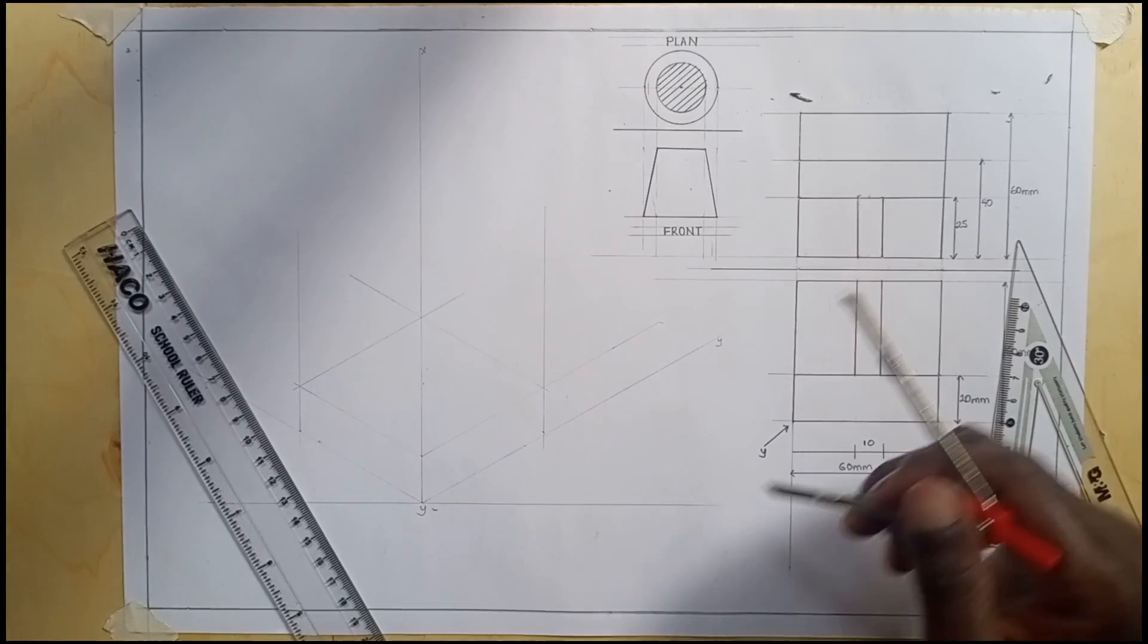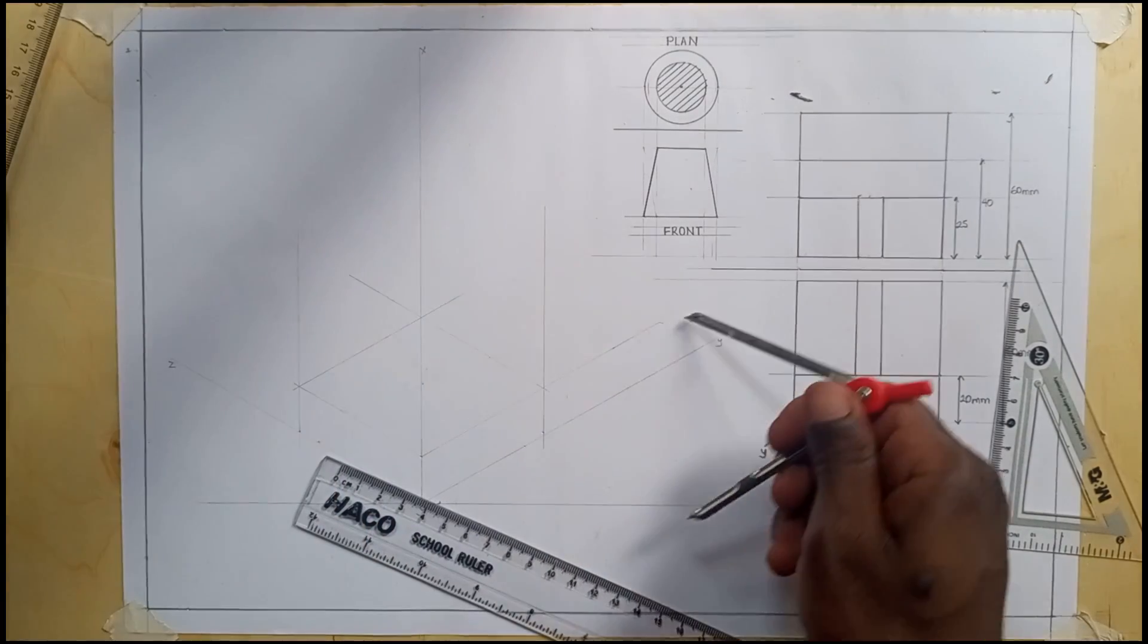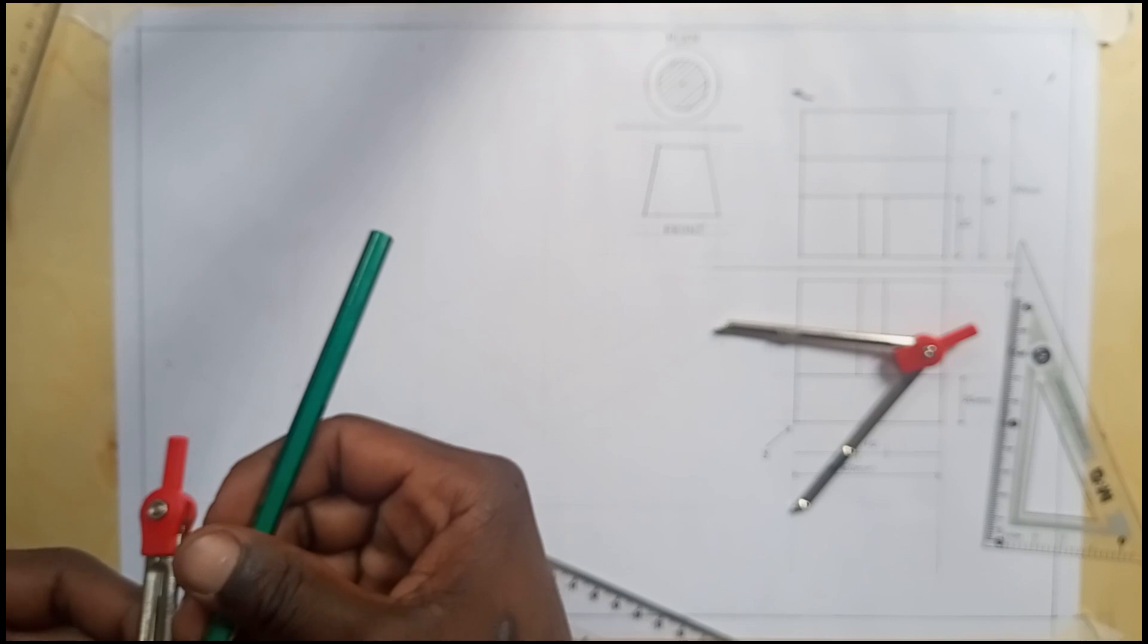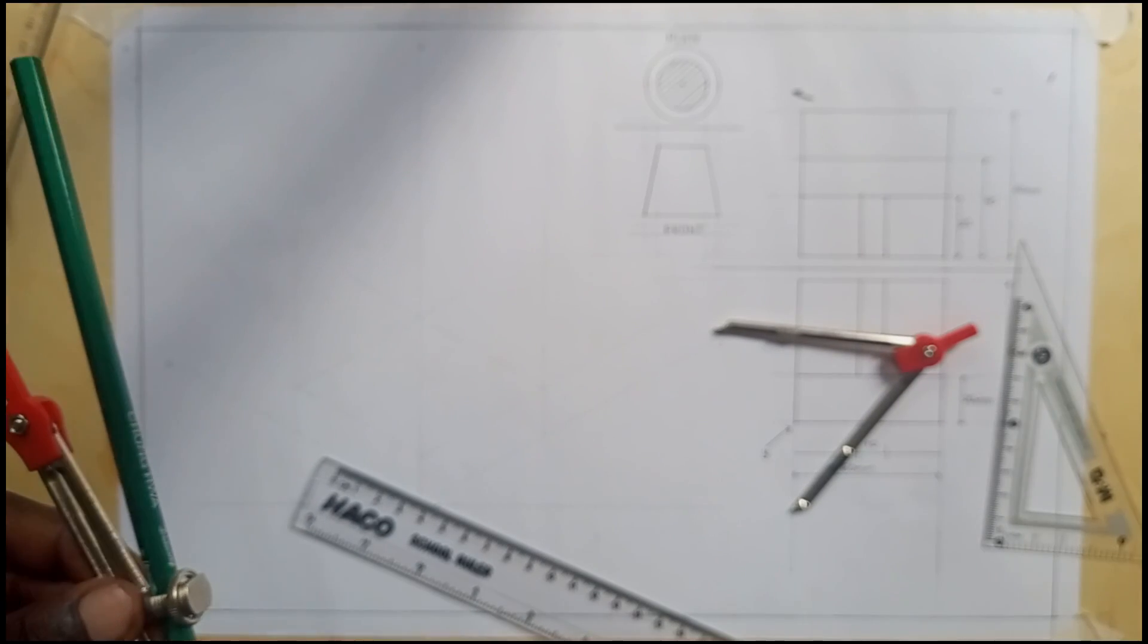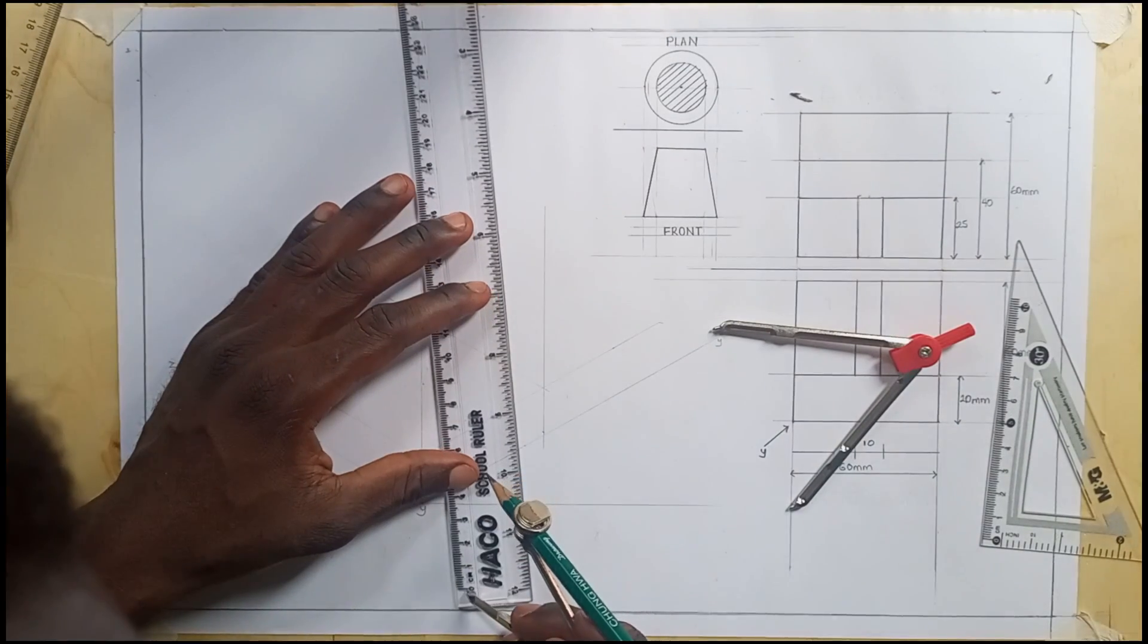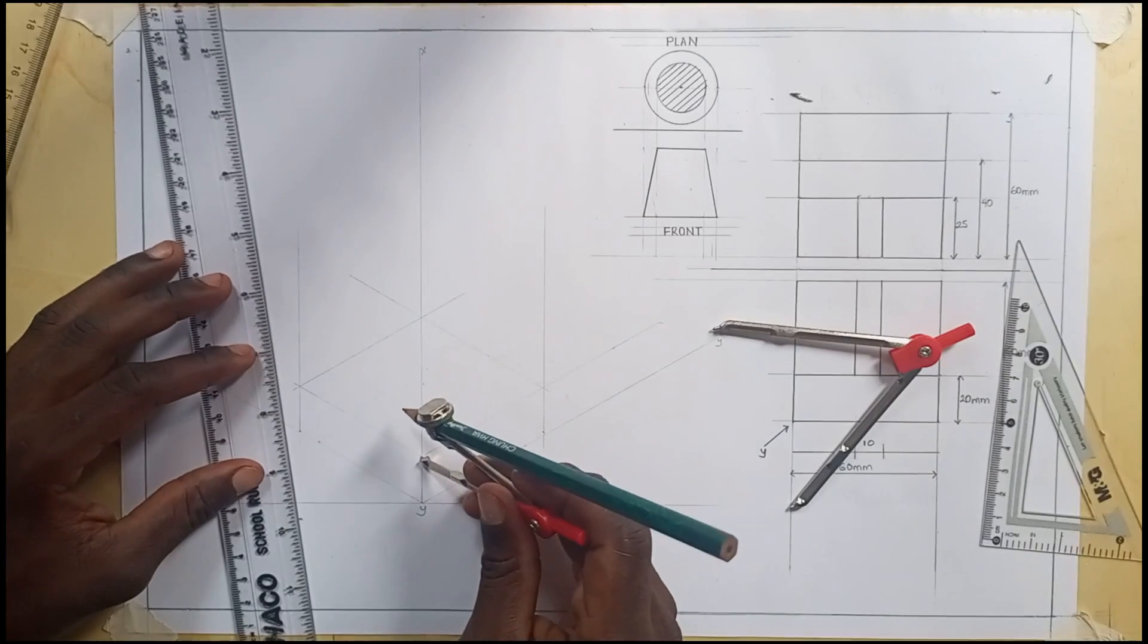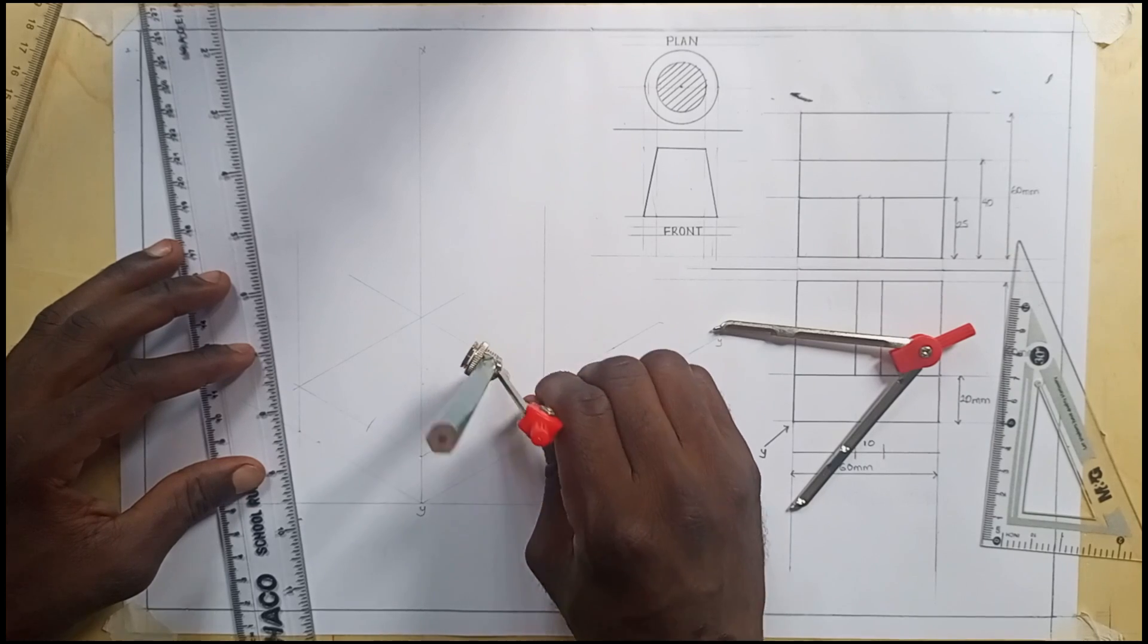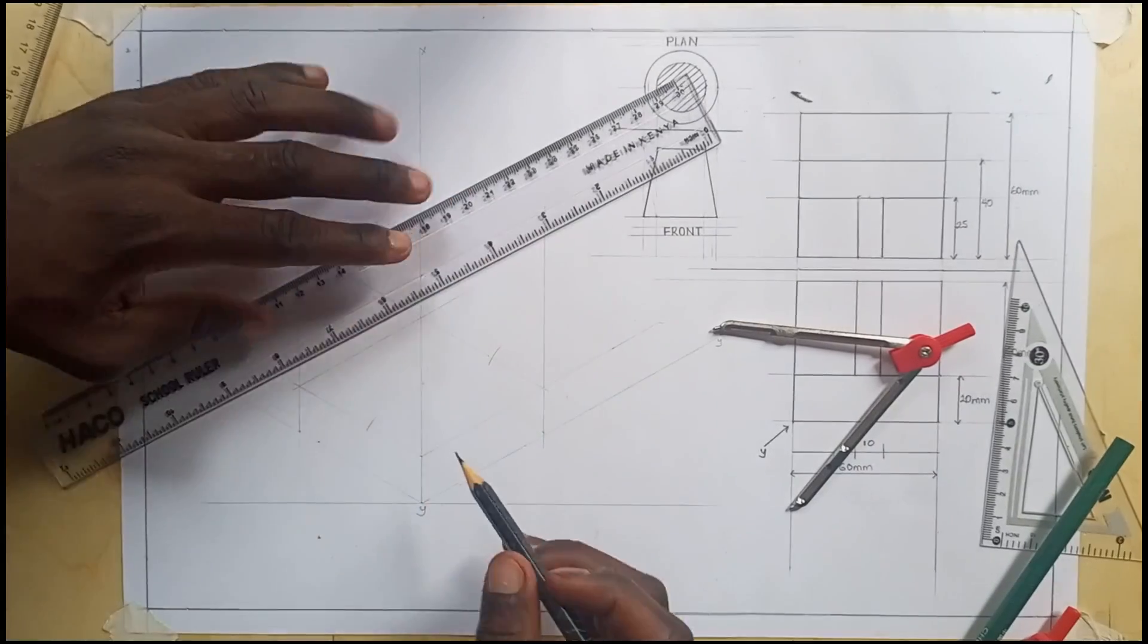When you're done, we shall measure off 25 millimeters right. I'll measure off 25, also put at that point, measure off 25. So I join these two points.